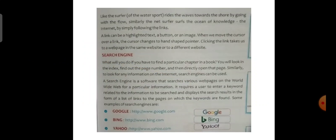Netsurfing. The act of searching on the World Wide Web by following one link after another without a planned search strategy is called Netsurfing. Like a surfer in the water sport rides the waves towards the shore by going with the flow, similarly the net surfer surfs the ocean of knowledge — the internet — by simply following the links. A link can be a highlighted text, a button or an image. When we move the cursor over a link, the cursor changes to a hand-shaped pointer. Clicking the link takes us to a web page in the same website or to a different website.